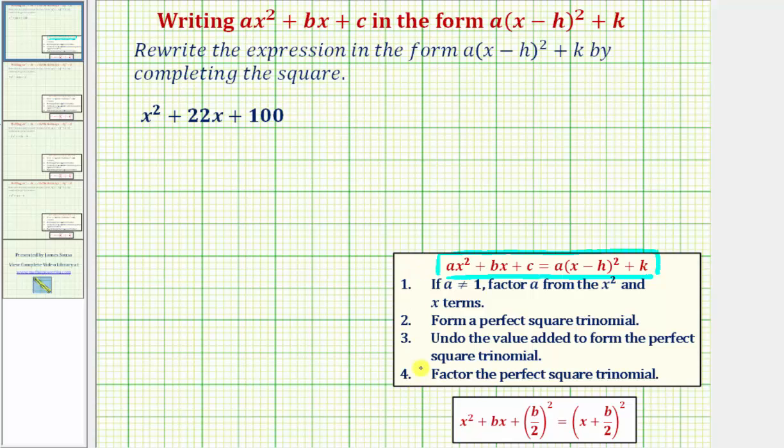To do this we'll follow these four steps. Step one, if the coefficient a doesn't equal one, we'll factor a from the x squared and x terms. Notice in our example, the leading coefficient is one so we can skip step one and move to step two.